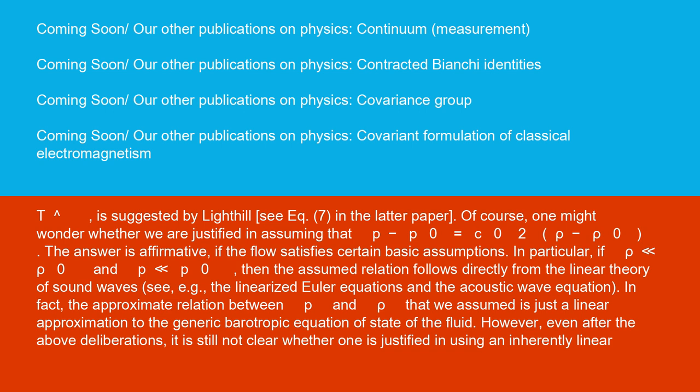Of course, one might wonder whether we are justified in assuming that p - p₀ = c₀²(ρ - ρ₀). The answer is affirmative if the flow satisfies certain basic assumptions. In particular, if ρ << ρ₀ and p << p₀, then the assumed relation follows directly from the linear theory of sound waves, e.g., the linearized Euler equations and the acoustic wave equation.